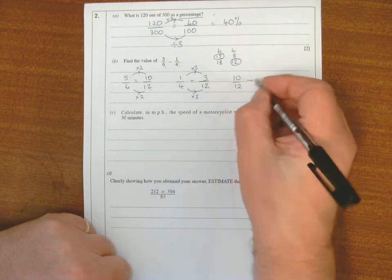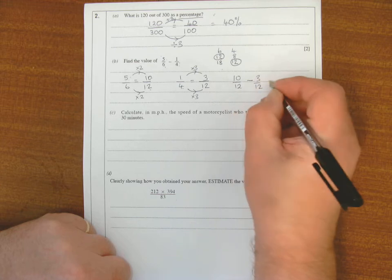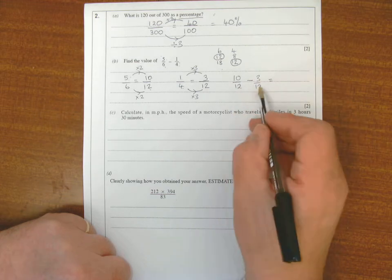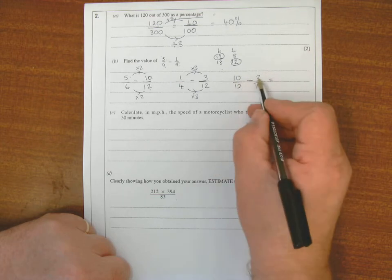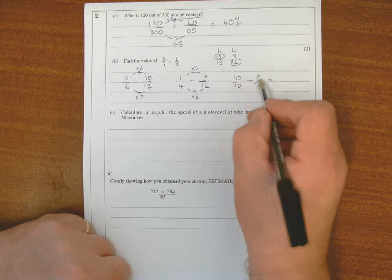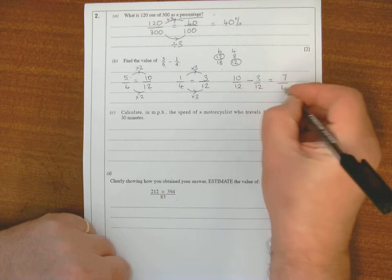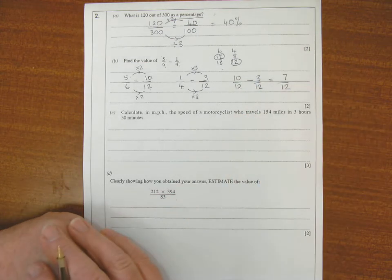Instead of 5/6 I'll write 10/12, instead of 1/4 I write 3/12. And that now, because I got the numbers the same, this is a really easy subtraction. I just subtract the numbers on the top, bottom number stays the same. So 10 take away 3 is 7, and bottom number stays the same, so that's 7/12.